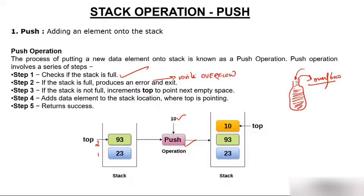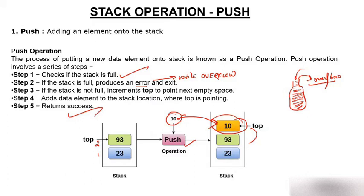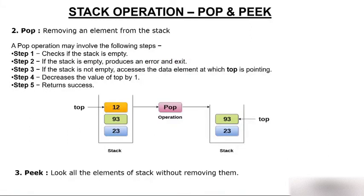If the stack is not full, increment top to point to the next empty space — top goes to top plus one. Now top is pointing to the empty space. Then add the data element to the stack at the position top is pointing to, and return success. These are the five steps involved in the push operation.